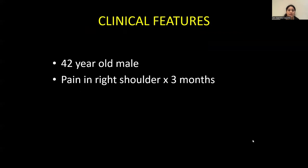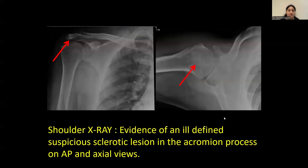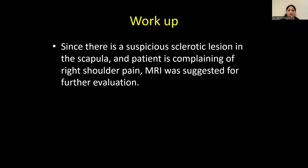A 42-year-old male presented with pain in the right shoulder since 3 months. Shoulder X-ray showed evidence of an ill-defined suspicious sclerotic lesion in the acromion process on AP and lateral views. Since there is a suspicious sclerotic lesion in the scapula and the patient is complaining of right shoulder pain, MRI was suggested for further evaluation.